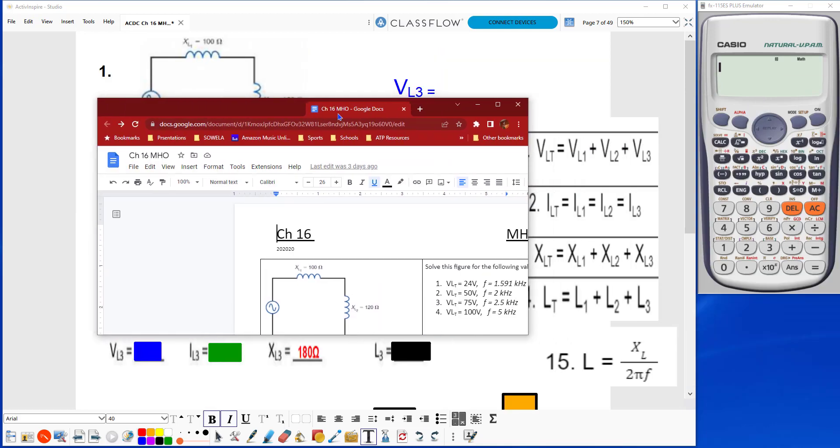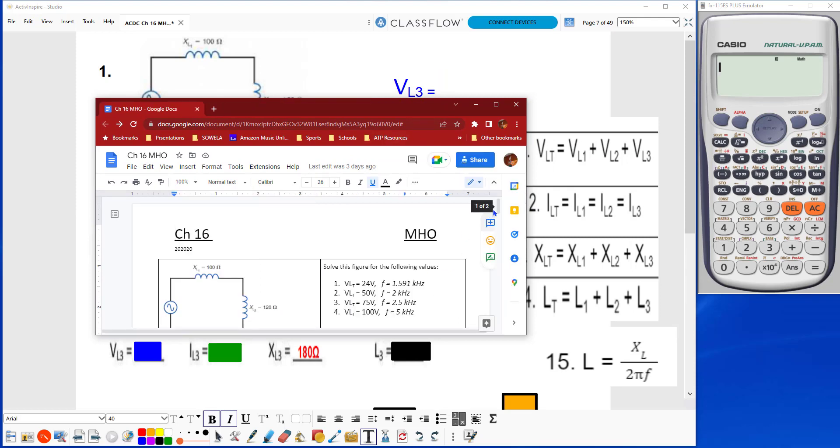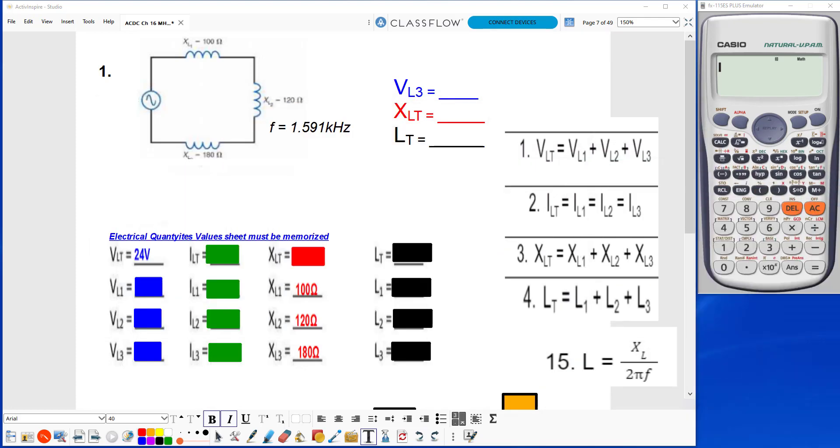We're going to take our values from the chapter 16 math handout number one. Gonna fill in these blanks so our VLT value is 24 volts.